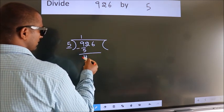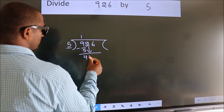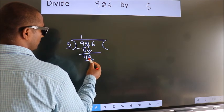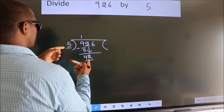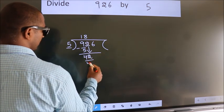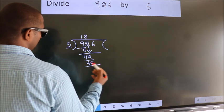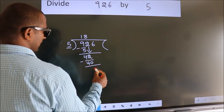After this, bring down the beside number. So, 2 down. So, 42. A number close to 42 in 5 table is 5, 8, 40. Now, we subtract. We get 2.